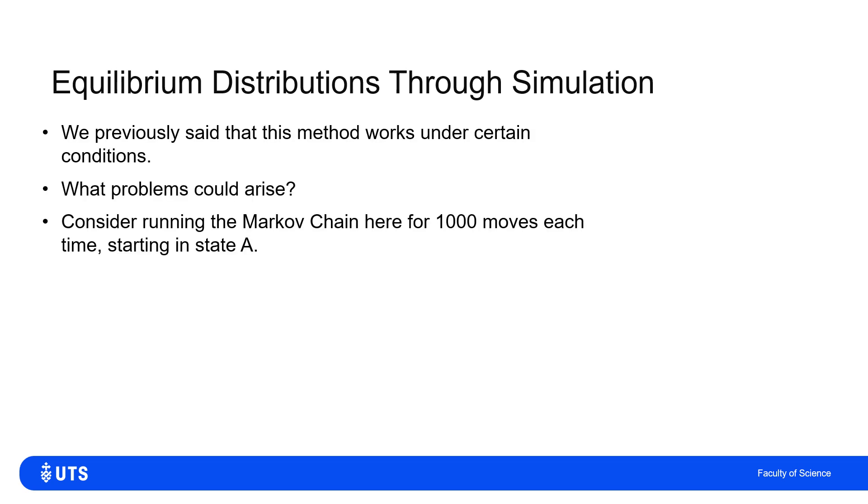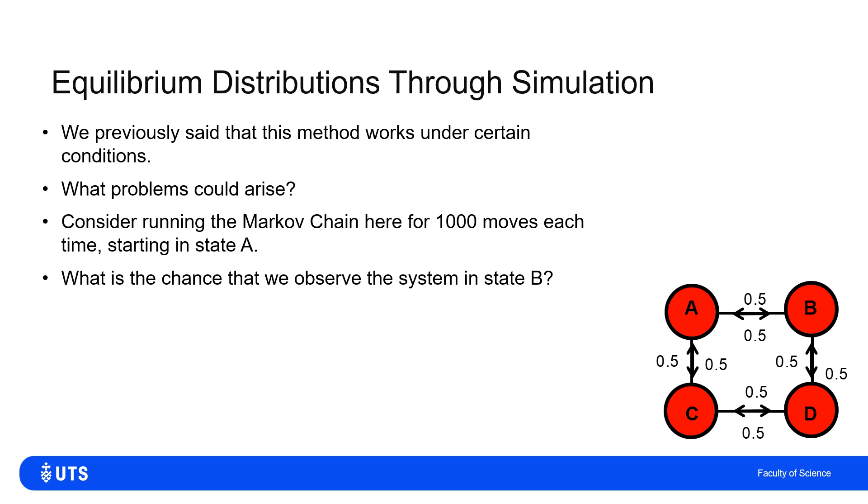Again, we've already said that this method works under certain conditions. When might it not? Okay, well, let's say I run the Markov chain for exactly a thousand moves starting in state A. I get an observation. I repeat that. I start in state A, run it for a thousand moves, get an observation. Repeat, repeat, repeat. If I do this on this original Markov chain that we agreed, the equilibrium distribution was all four states equally likely. But if I do that, what's the chance that under my sampling thing of running for a thousand moves observing something, what's the chance I observe it in state B after exactly one thousand moves?